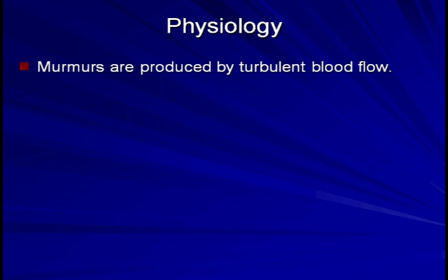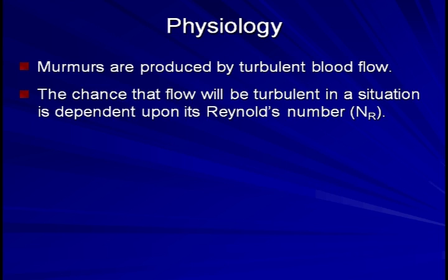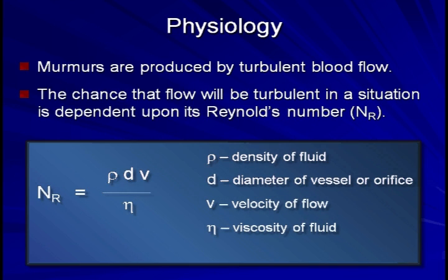The chance that blood flow will be turbulent in any given situation, thus produce a murmur, is dependent upon its Reynolds number, with turbulence being more likely when the Reynolds number is higher. The Reynolds number can be calculated from the density of the fluid, the viscosity, and the velocity. In addition, as the cross-sectional area of a vessel or valve is indirectly proportional to the velocity of flow through that area, we can modify our equation accordingly.